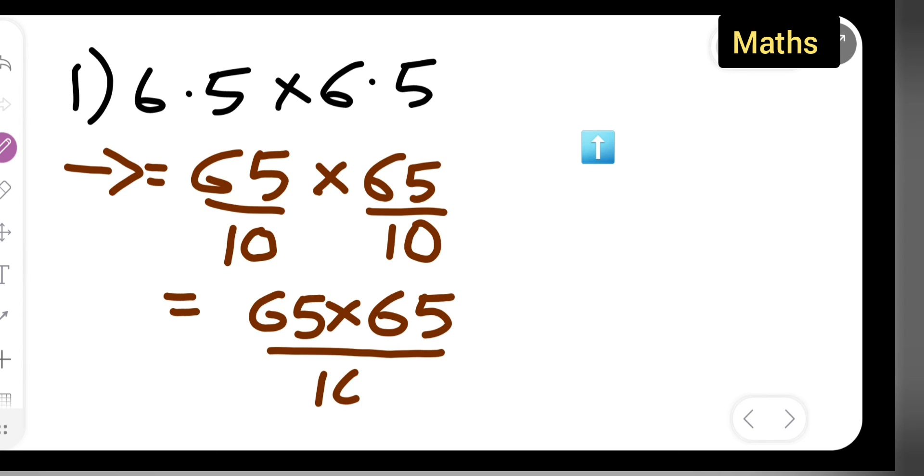Multiply and see: 65 multiplied by 65. So 5 fives are, you will get 25. So 5 sixes are 30, 30 plus 2 will give you 32, plus 6 fives are 30.